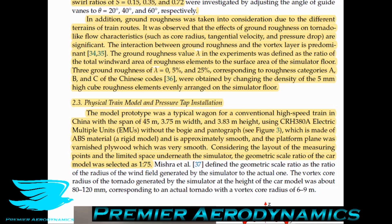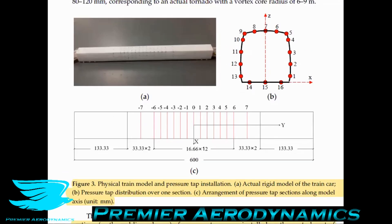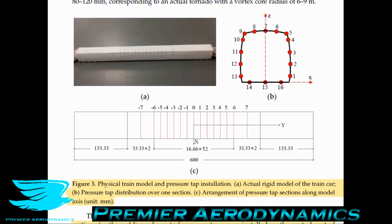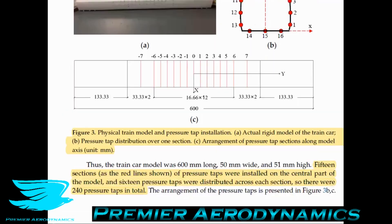The platform plane was varnished plywood, which was very smooth. Considering the layout of measuring points and limited space underneath the simulator, the geometric scale ratio of the car was 1 to 75. The train's not actually moving in this case, so Reynolds number effects may be limited. They show a picture of the train cabin with pressure tappings distributed equidistantly around the outside: 15 sections of pressure taps on the central part of the model, with 16 pressure taps per cross-section, giving 240 pressure taps in total. It's a simplified model — no pantograph, windows, or other features — effectively a rectangular prism.